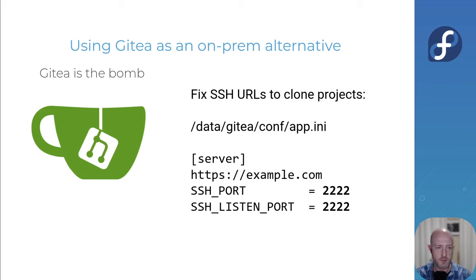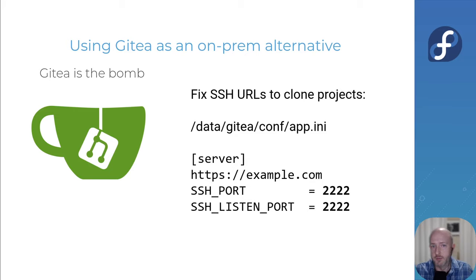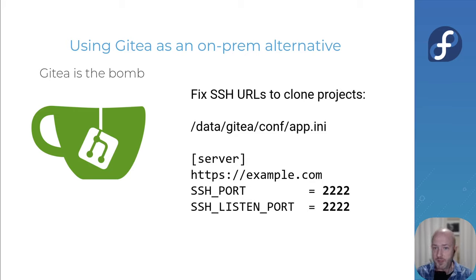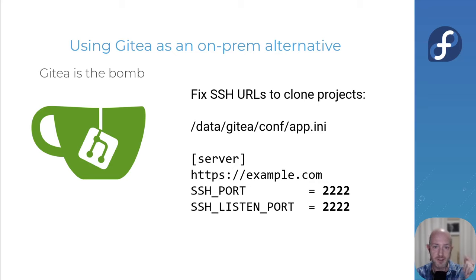Once set up, all URLs — like when you create a new project and clone it — will take care of the port for you so you can just paste them in. You literally have an on-prem Git environment from just dropping that Quadlet in. If you're new to Quadlets: run `systemctl daemon-reload` to tell systemd your units have changed, then `systemctl start gitea` and you're off to the races.